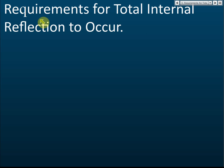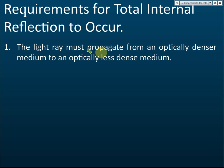Now, requirements for total internal reflection. In our daily life we seldom see total internal reflection, because there are requirements that are usually very hard to fulfill under normal conditions. The first requirement is that the light ray must propagate — meaning move — from an optically denser medium to an optically less dense medium.